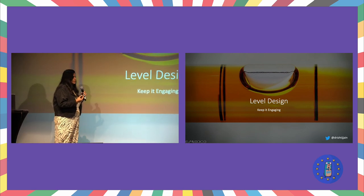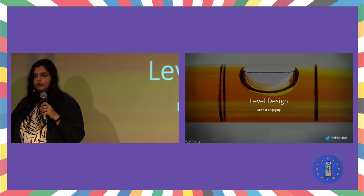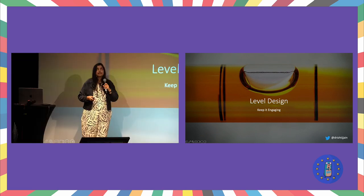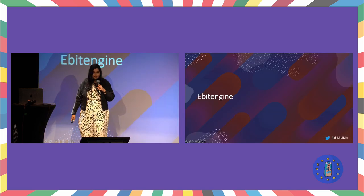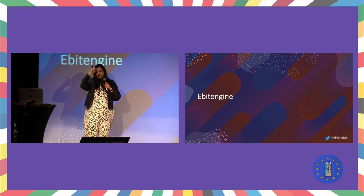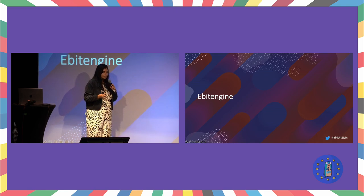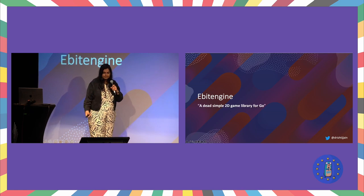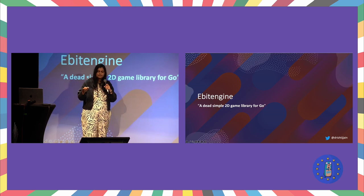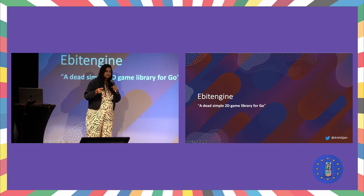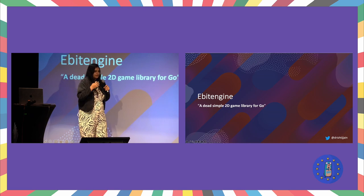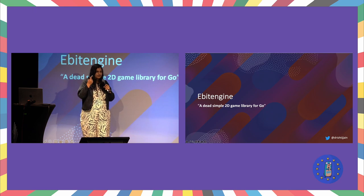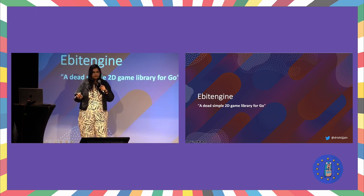Now, coming to Go and using more of its power. There are two open source libraries that help us make games in Go. The first is Ebit Engine — the library most often used, with a good community around it. As the documentation says, it is a dead simple 2D library for Go. If you're building a 2D game, Ebit Engine is the best way to go — for example, the 2048 game or Wordle, which were very popular.